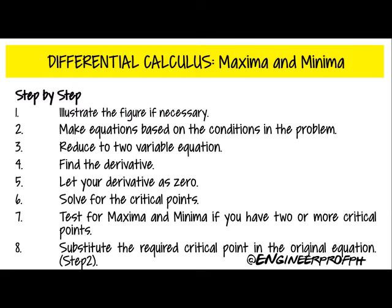Reducing to a two-variable equation means you have one variable on the right-hand side and one variable on the left-hand side. After doing that, the fourth step is to differentiate with respect to your other variable. Then to find the maximum and minimum, the fifth step is to equate your derivative to zero, so you can find your critical points.